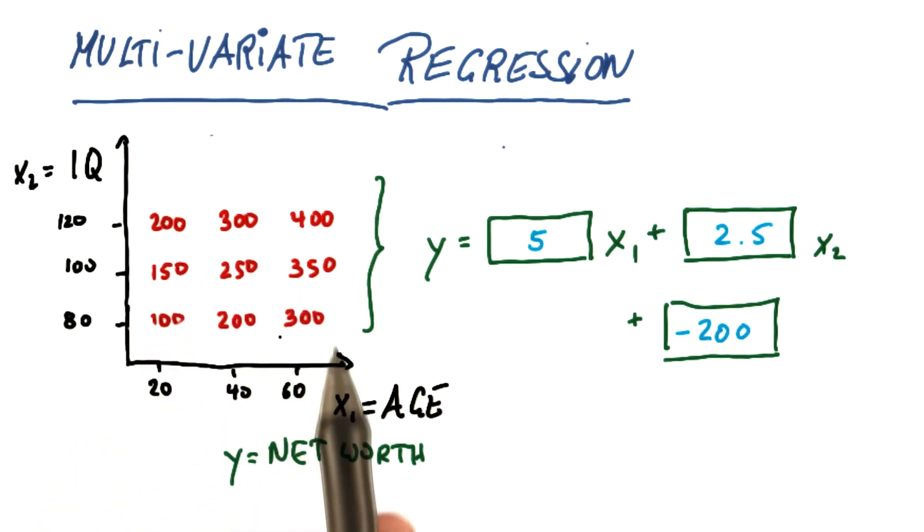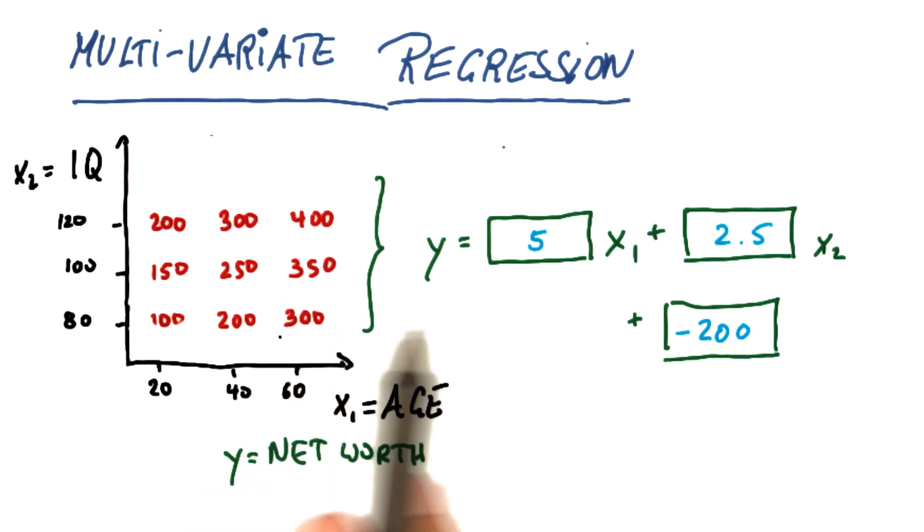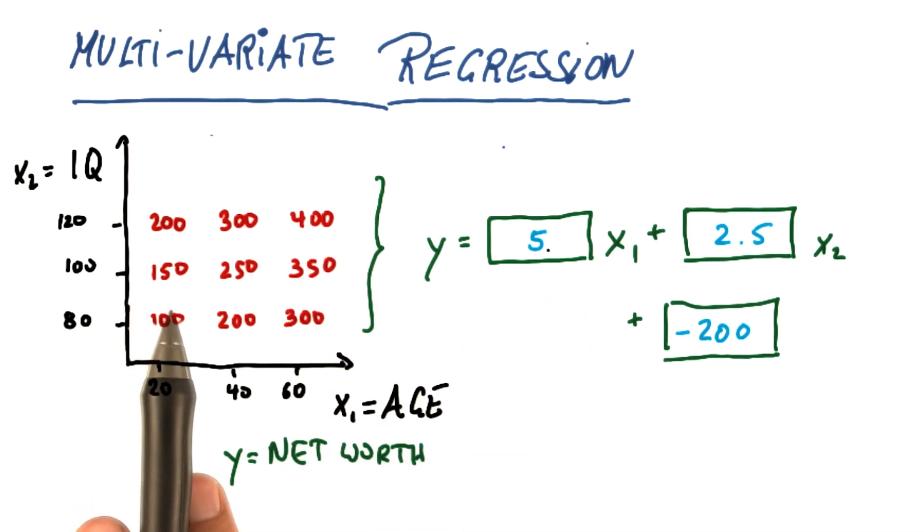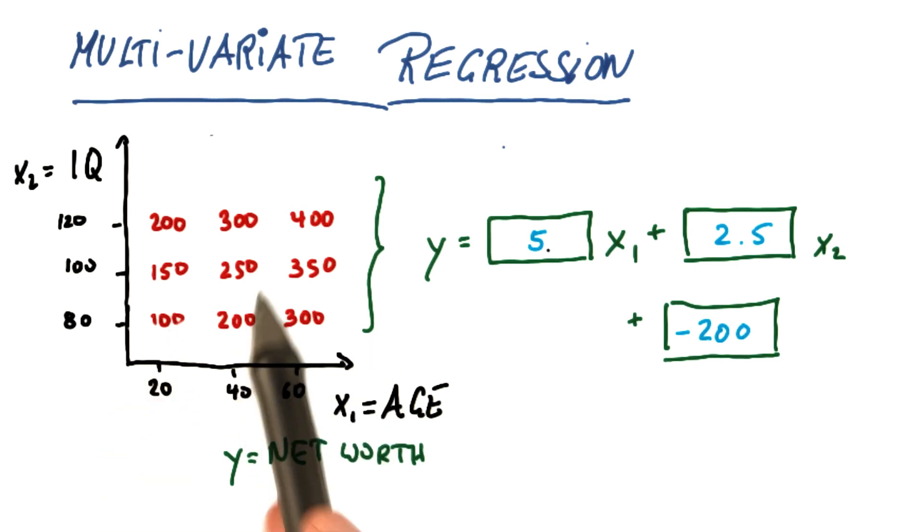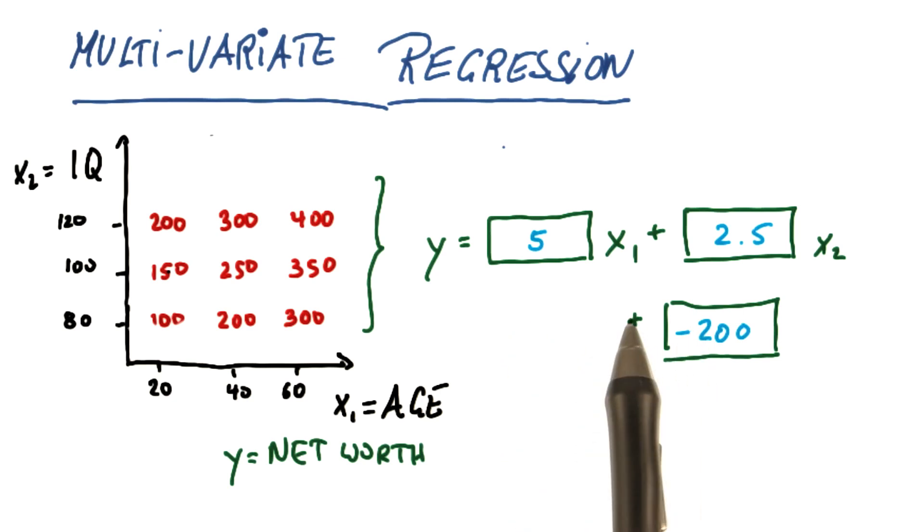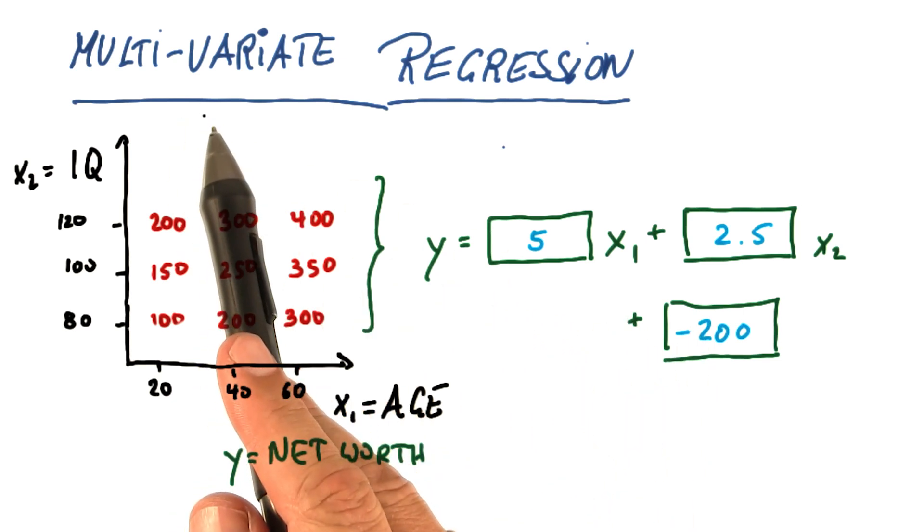in reality we don't have such nice situations where what we call a linear hyperplane explains data so well. But it gives you a sense that the predicted variable, in this case net worth, could be a factor of more than one input variable and that is called multivariate regression.